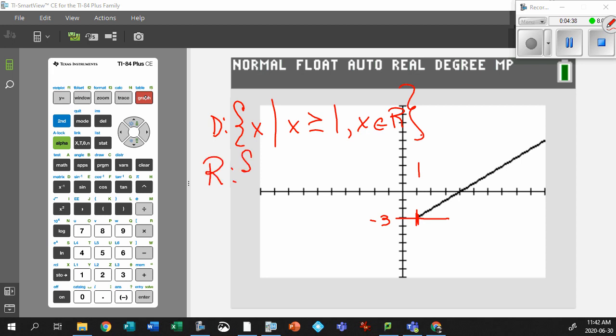And x can be any real number. There it is. Our range, then, is all values of y such that my y's have to be greater than or equal to -3. And y can be any real number after that. So that's how you do your domains and ranges on a calculator. Pretty straightforward, huh?